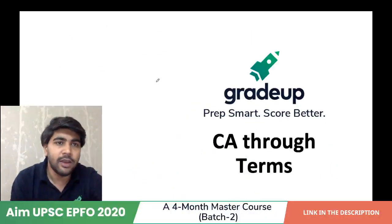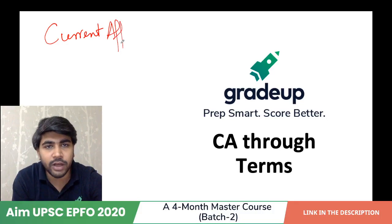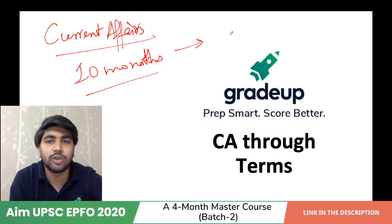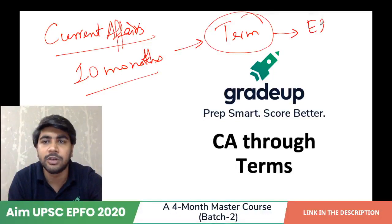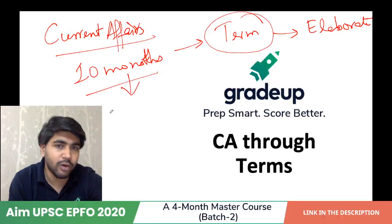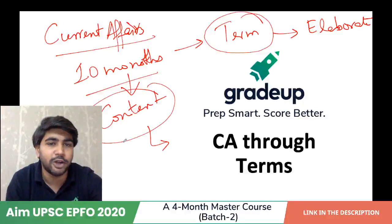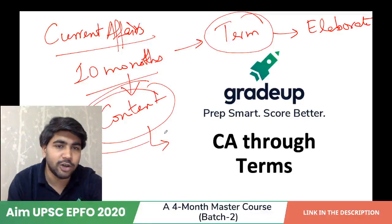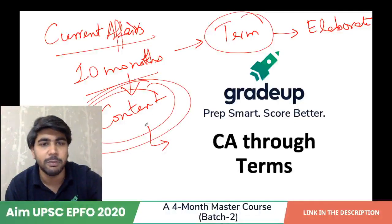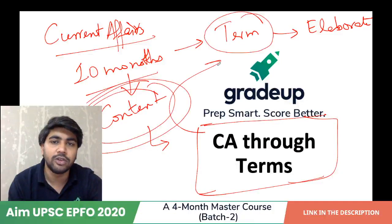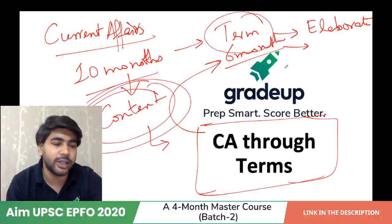What I do in this session is summarize whatever current affairs have come up in the past 10 months through terms. I bring you a term and elaborate on it. If you have no context of what has happened in the past, you will not be able to follow along. My suggestion is that if you are at beginner level, simply go through the newspapers for now. Current affairs through terms is meant for aspirants who have covered current affairs for a substantial period — say 6 months — and have contextual knowledge.